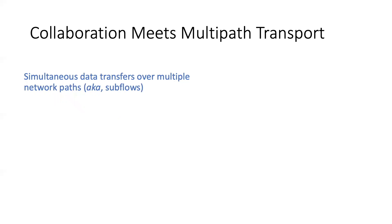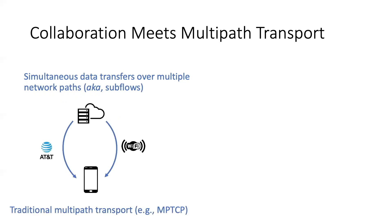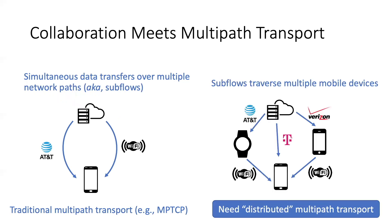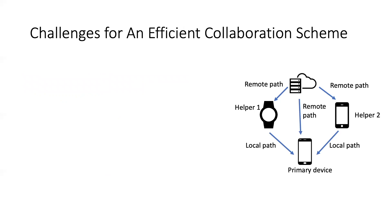These benefits motivate us to build a collaboration framework to make full use of wireless resources. By closely examining these use cases, we notice that all of them can be realized under the multipath transport paradigm, where user data can be distributed over multiple subflows or network paths. Unlike traditional multipath solutions such as MPTCP, we need to support distributed multipaths where subflows traverse different devices. Specifically, such a system involves one primary device where the client app runs, and multiple helper devices which boost network performance. Data is downloaded over multiple remote paths, and the primary merges all received data for delivering the whole content to the client app.